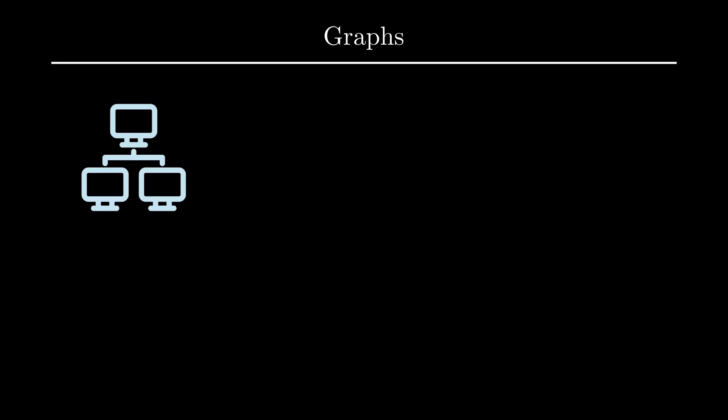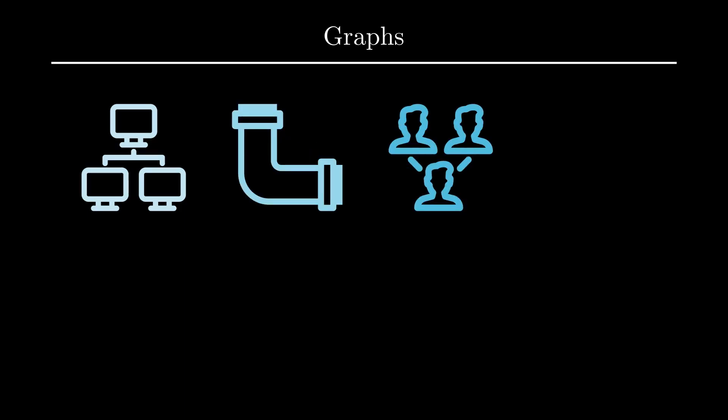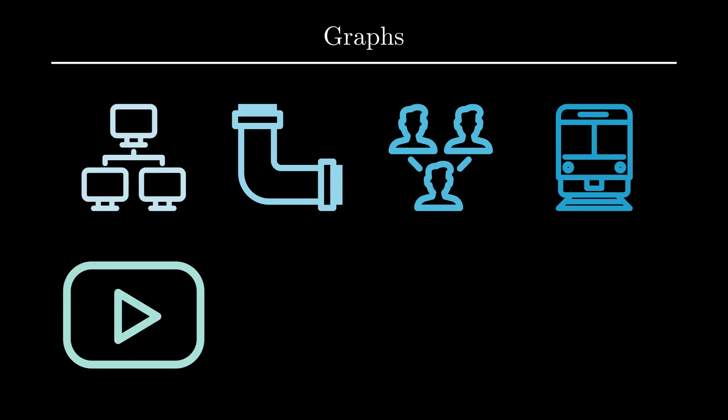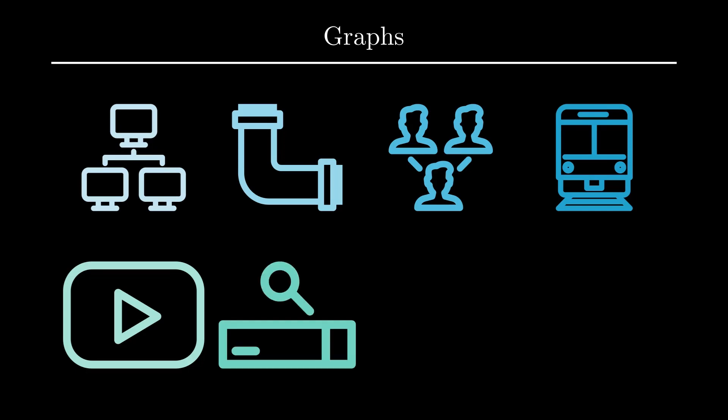Now that we've introduced this abstract construct of a graph, you might wonder where it's useful in real life. One great example is the internet, where each device is a node or vertex and the edges are the connections between devices — whether that's Wi-Fi, Bluetooth, cables, or whatever. Graphs also appear in water or electricity networks, social networks, transport networks, video recommender systems where users and videos are two types of nodes, and other search engines and recommender systems.